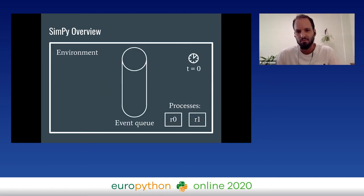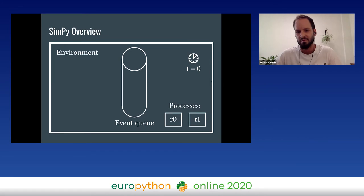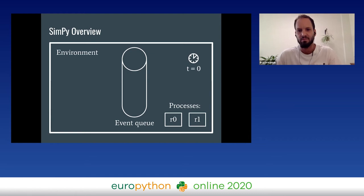To understand SimPy, you need to be familiar with three objects. The first is the environment, the second is the process, and the third is events. The environment is the main object that manages the world simulation — it has the simulation clock and an event queue. A process represents the component we want to simulate. So in our example, we have two processes: one for robot zero and one for robot one.